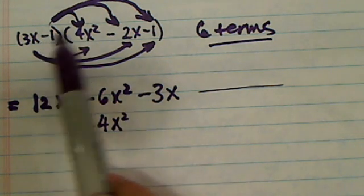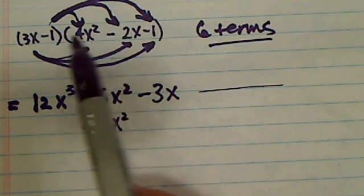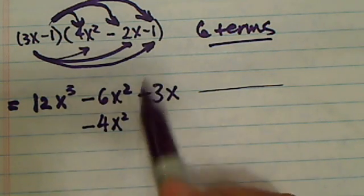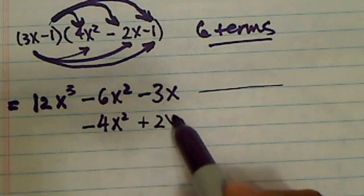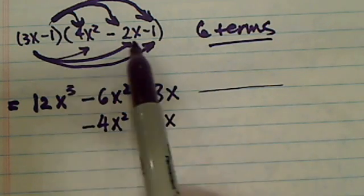Minus 1 times this one is minus 4x². Minus 1 times this one, it's going to give me a positive 2x because two minus signs when they multiply they give you a positive. Minus 1 times minus 1 you have a plus 1.